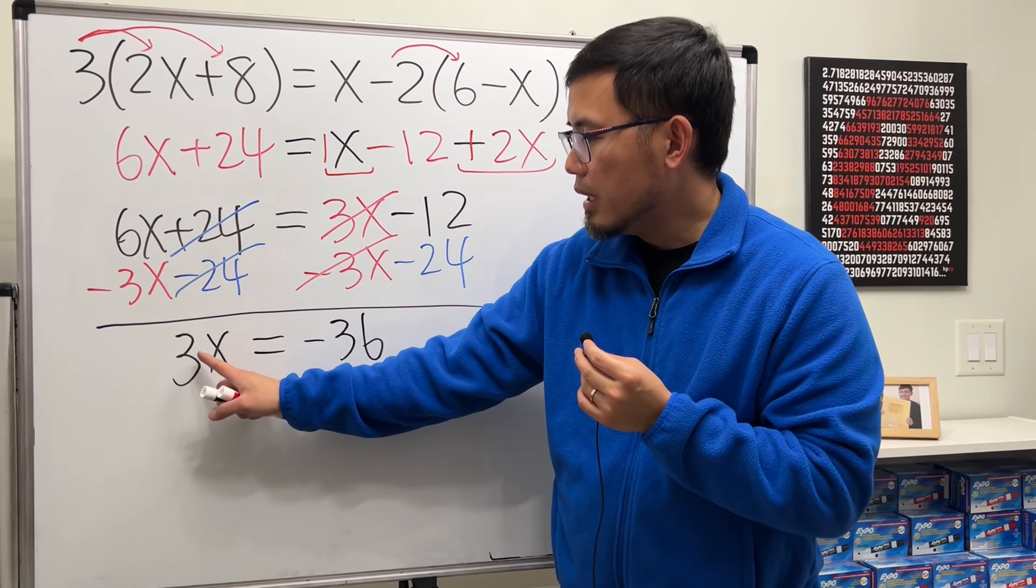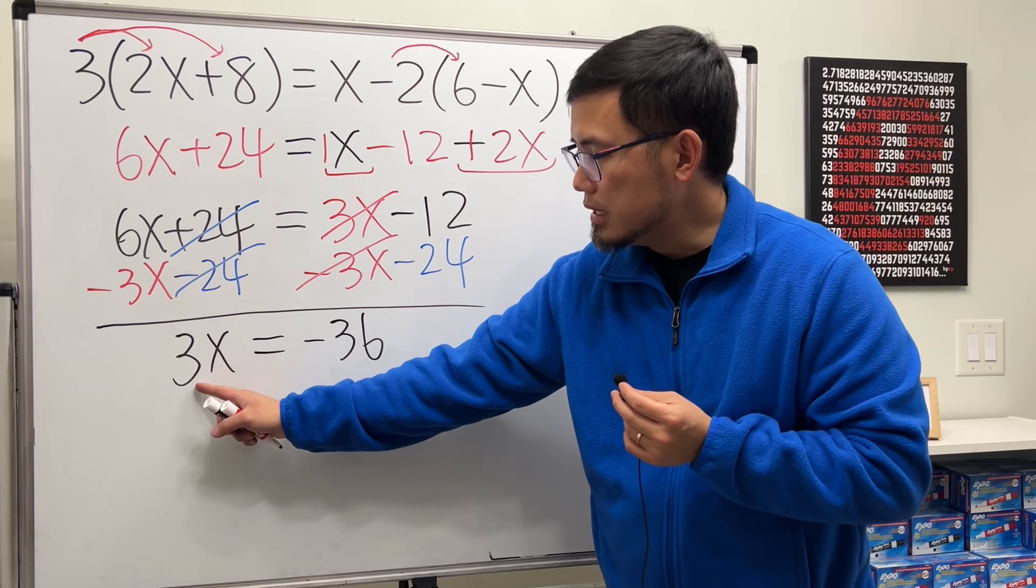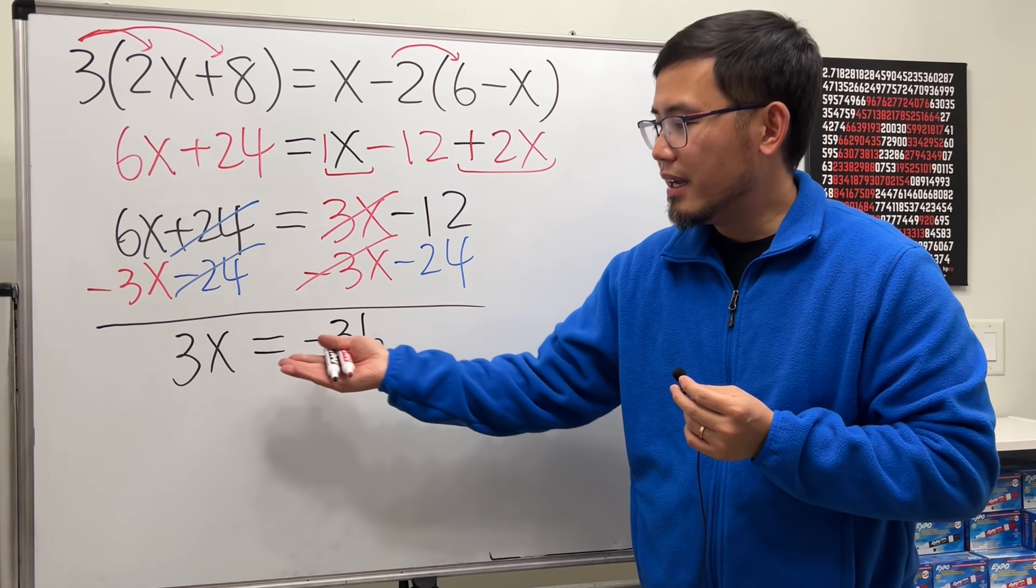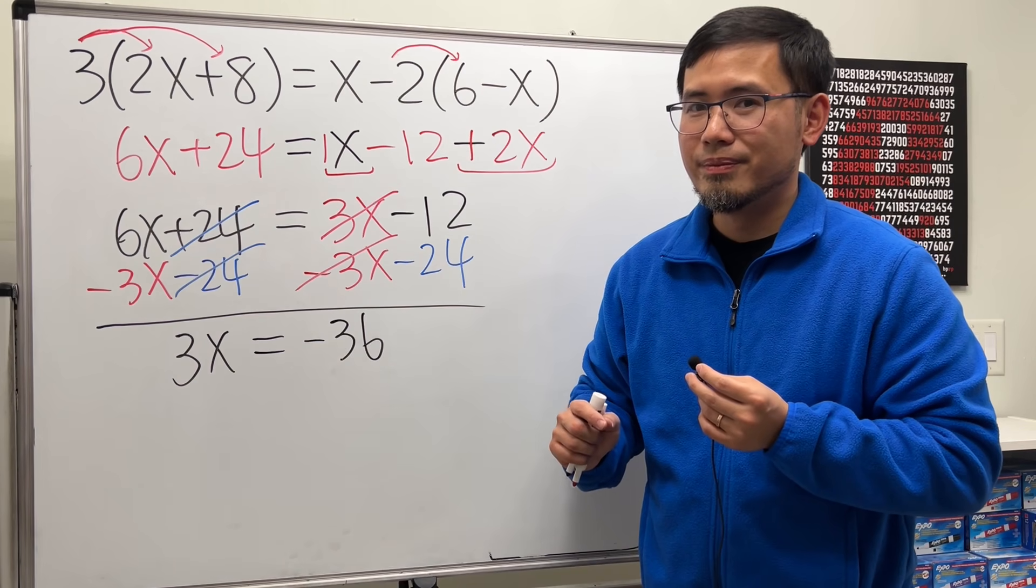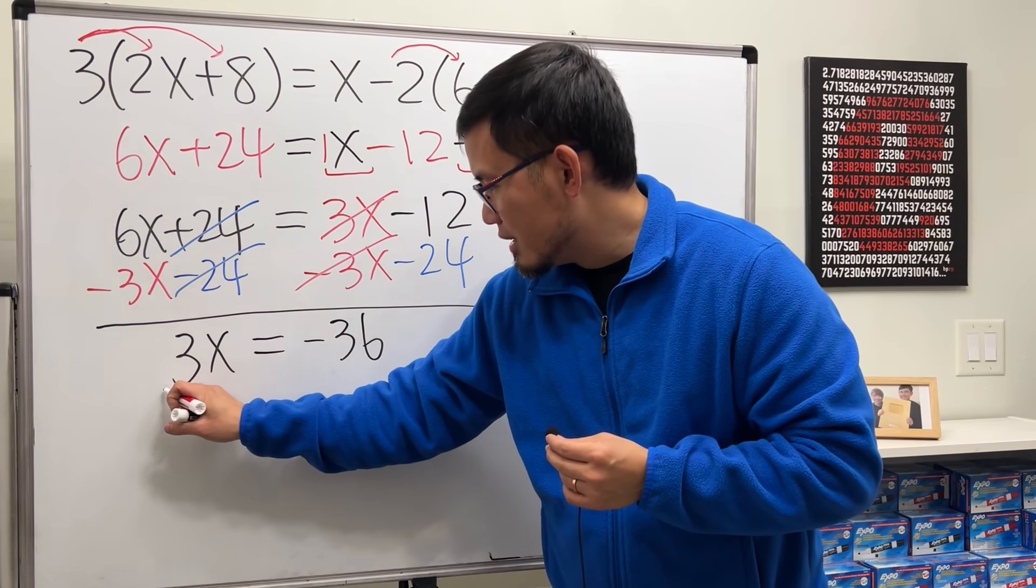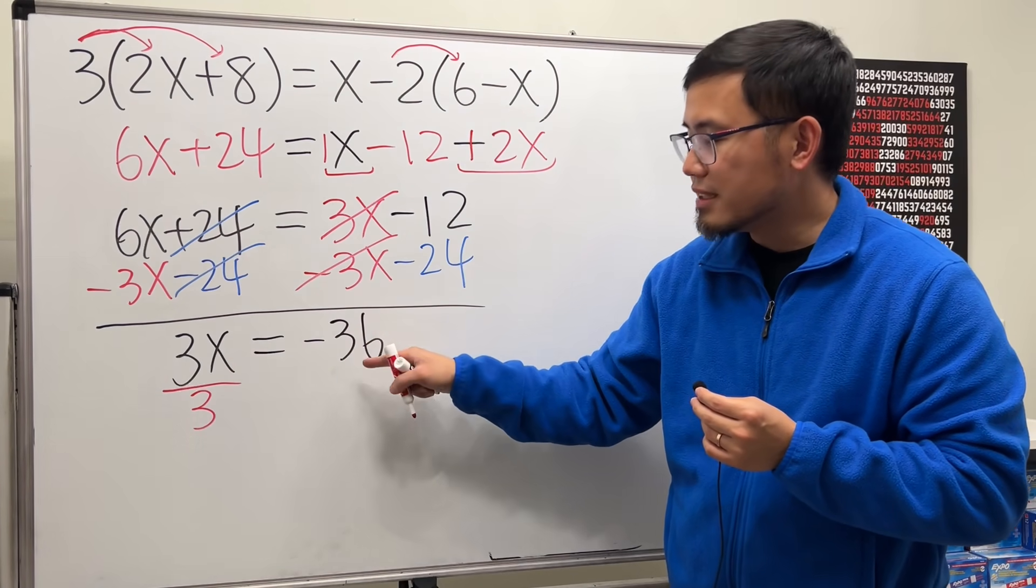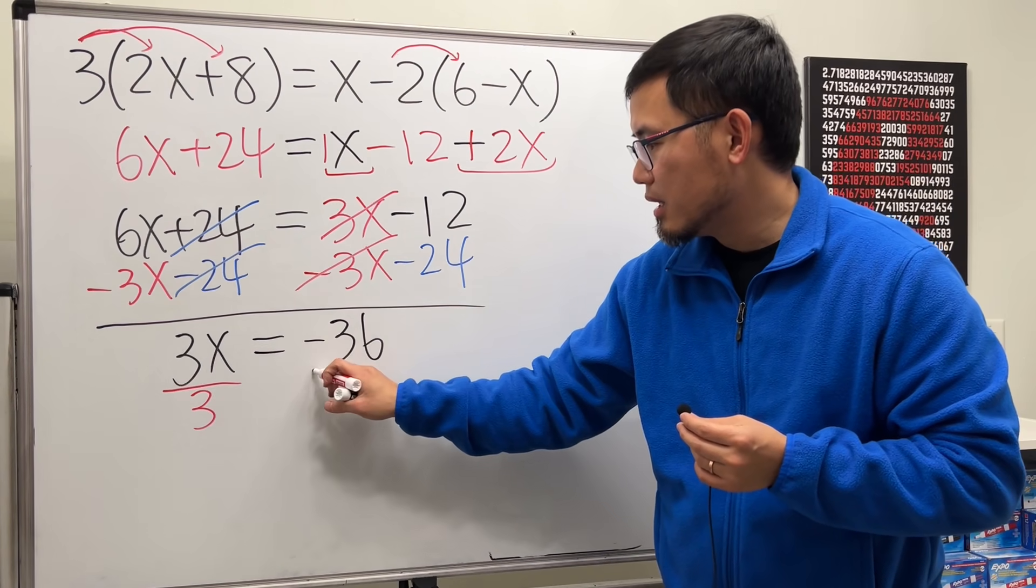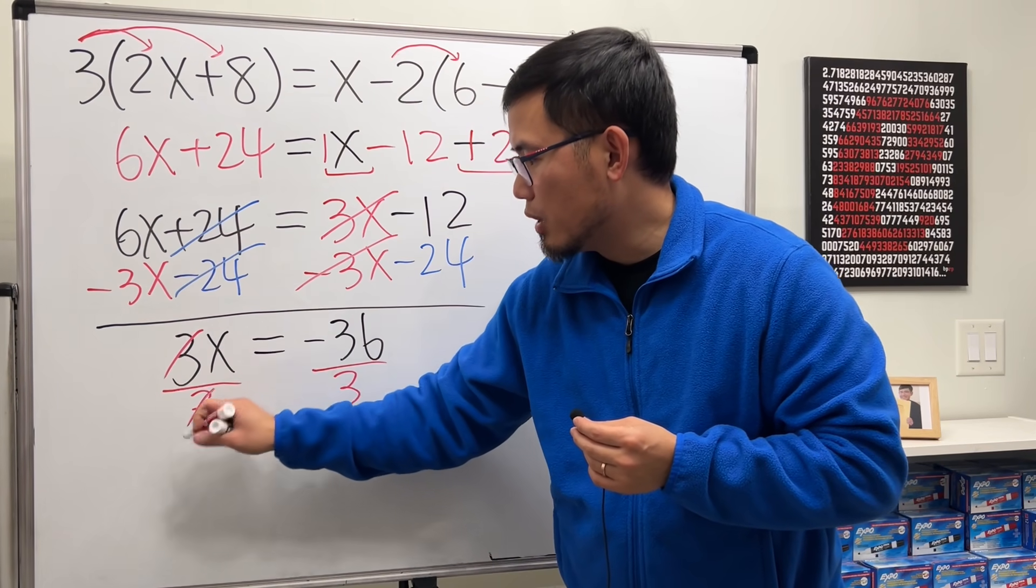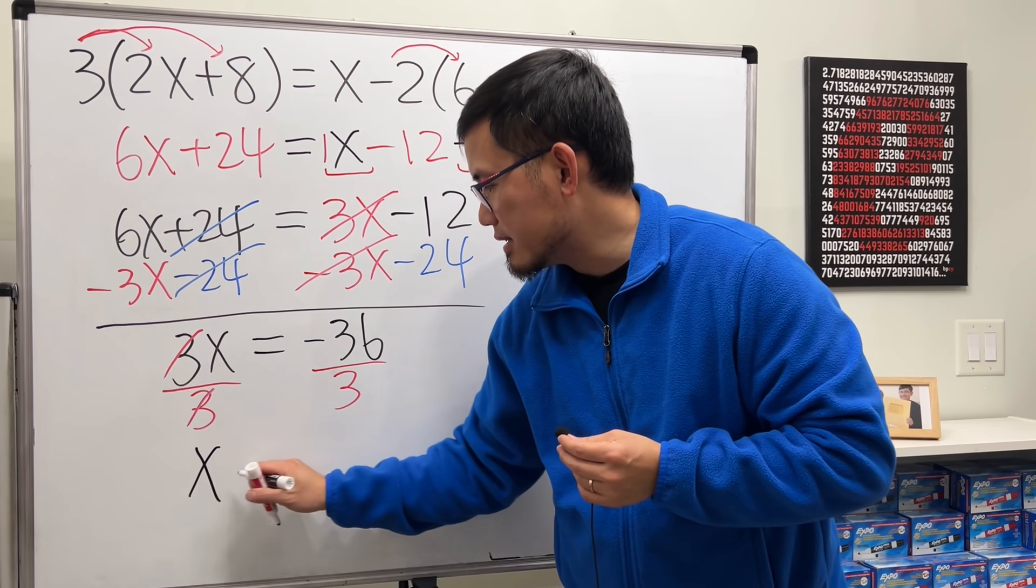So now we have 3x equals negative 36. This means 3 times x is equal to negative 36. And how do we get rid of this 3? Well, we will have to divide it by. Again, do the opposite. So I'm going to divide this by 3. And we go to the other side and do the same thing, divide this by 3. 3 divided by 3 cancel and we get 1. 1x. So we get the x by itself.